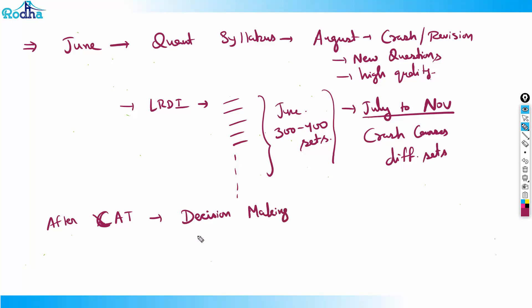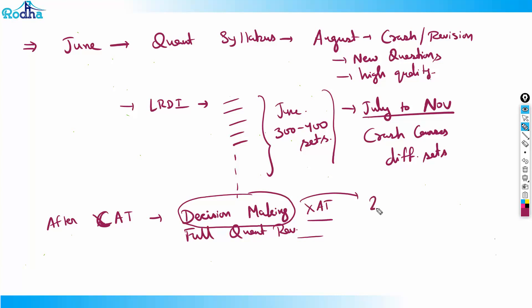After CAT, we also do a Decision Making course for XAT and a full Quant revision. Last year, around 23 students got 98-plus percentile in Decision Making, which was the trickiest section of that exam. We study and discuss everything throughout the entire year, so it's a comprehensive year-long program.